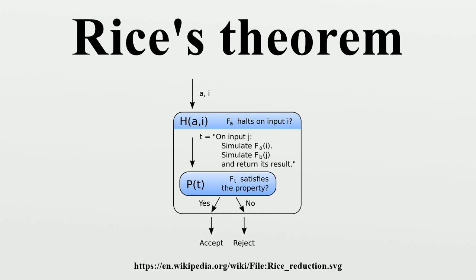A set extends a string of 0s and 1s if for any i, the i-th element of the string is 1 if i is in the set, and 0 otherwise. A string is winning-determining if any recursive set extending it belongs to C. A string is losing-determining if no recursive set extending it belongs to C. The analog of Rice's theorem states: a class of recursive sets is computable if and only if there are a recursively enumerable set of losing-determining strings and a recursively enumerable set of winning-determining strings such that any recursive set extends a string in one of these sets. This result has been applied to foundational problems in computational social choice.